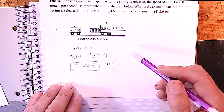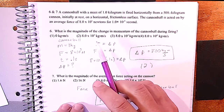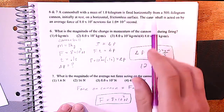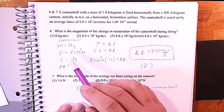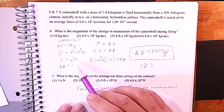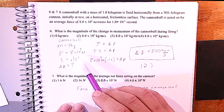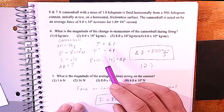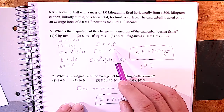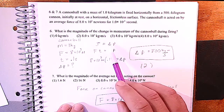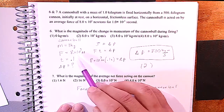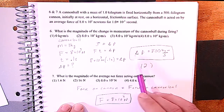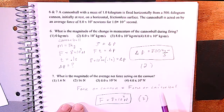Again, a problem with a ton of information. We organize it: mass, force, and time — and they're looking for the change in momentum. Impulse equals change in momentum, and impulse is also F·t. Since they gave us F and t, multiplying F by t gives us the change in momentum.